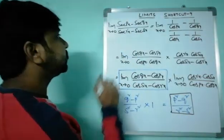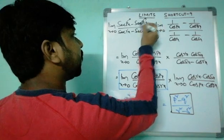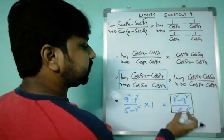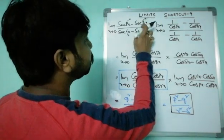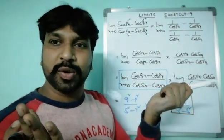If you see friends, secant px, secant qx, secant rx, secant sx, very easy formula: p square minus q square by r square minus s square. That's all the formula.